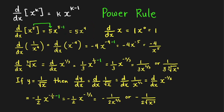Also, the derivative of x with respect to x — the power of x here is 1. If we bring down the power, we get 1 as the coefficient of x, and then x raised to the power reduced by 1, so 1 minus 1, which gives 0. We assume that x raised to 0 is equal to 1 for all x, so in this case we have 1 times 1, which is equal to 1.